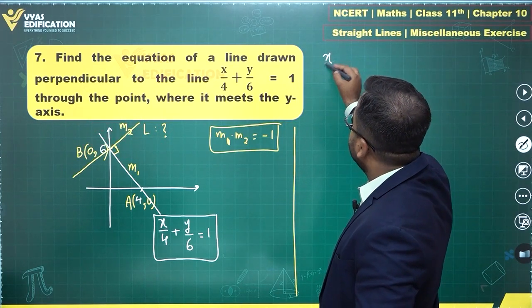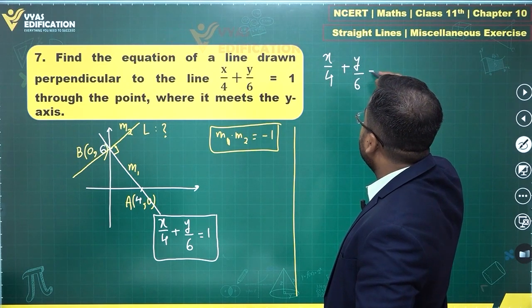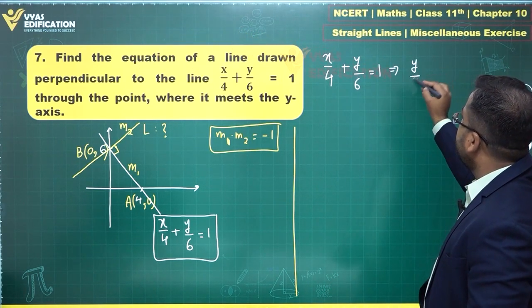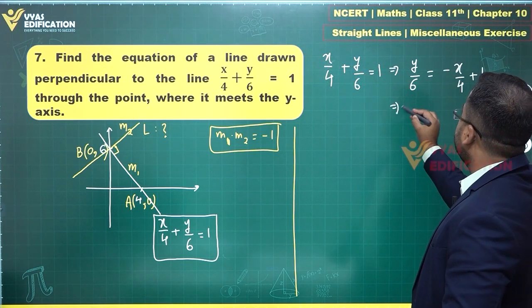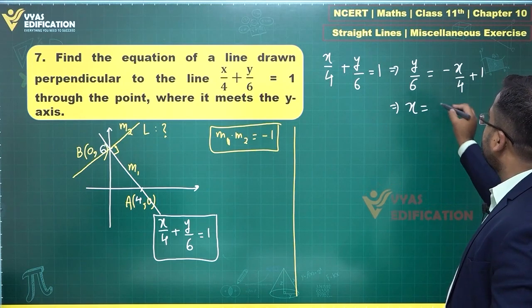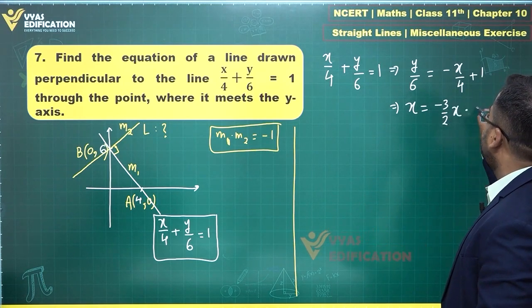x/4 + y/6 = 1 gives me y/6 = -x/4 + 1, which tells me y = -3/2 x + 6 after multiplying by 6.